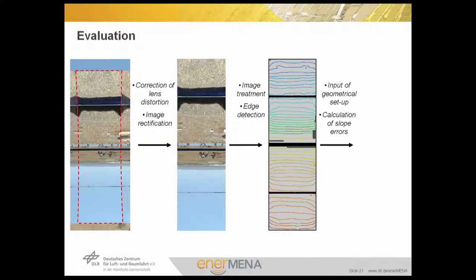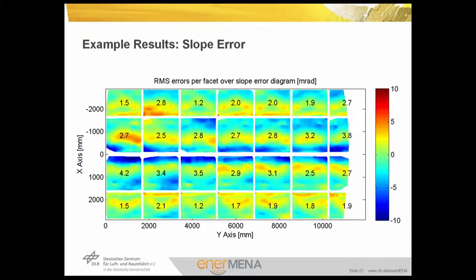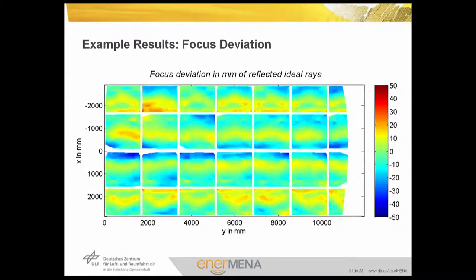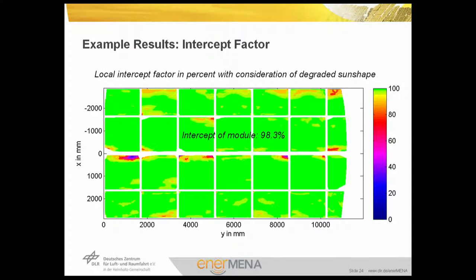From the image series at different elevation angles and the geometrical input — the position of the camera relative to the parabolic trough — we can calculate local slope deviations. In an example where an entire parabolic trough collector module has been evaluated, green indicates no slope error matching the ideal shape, while red and blue mean either too flat or too steep mirrors. We can assign statistical values to each single mirror panel and to the entire module. From slope deviations and the distance from mirror to absorber tube we can calculate focus deviation, which can be directly compared to the radius of the absorber tube. By ray tracing — taking into account sun shape, tracking error, and absorber tube displacement — we can obtain a local intercept map and calculate the intercept factor of the entire module, which in this case is 98.3%.